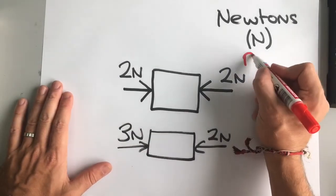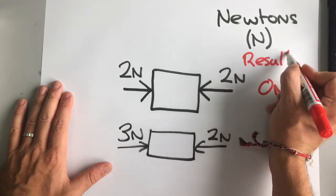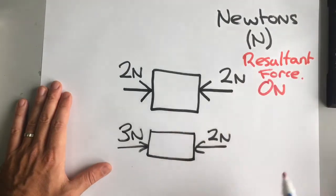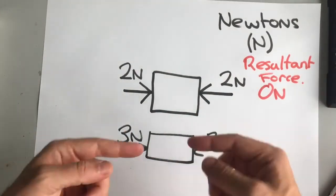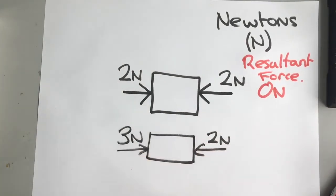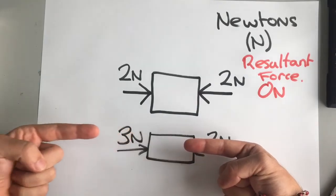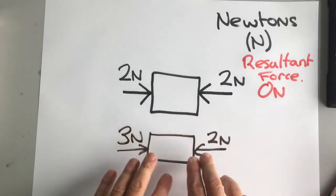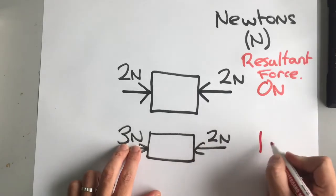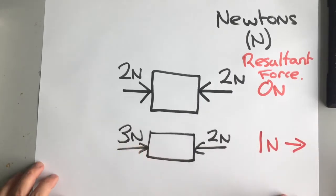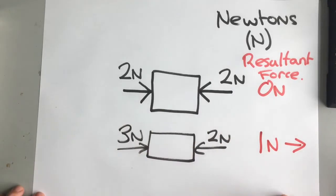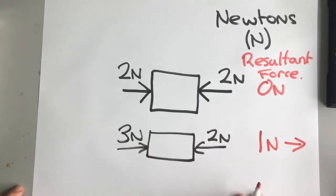We call this a resultant force. The resultant force is the total force after you've cancelled out any forces that might cancel each other out. Here we've got two newtons going that way but three newtons going that way. Two newtons cancels two of these newtons, but our resultant force is one newton to the right — because we've got one extra newton on that side.